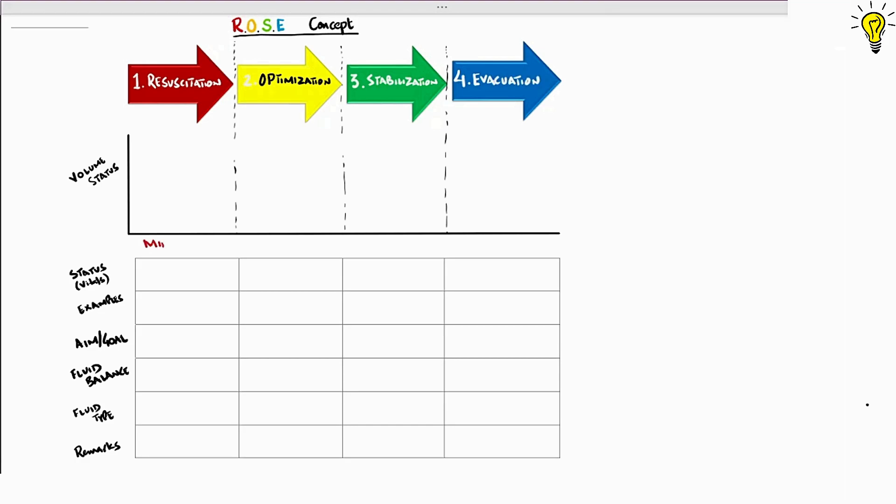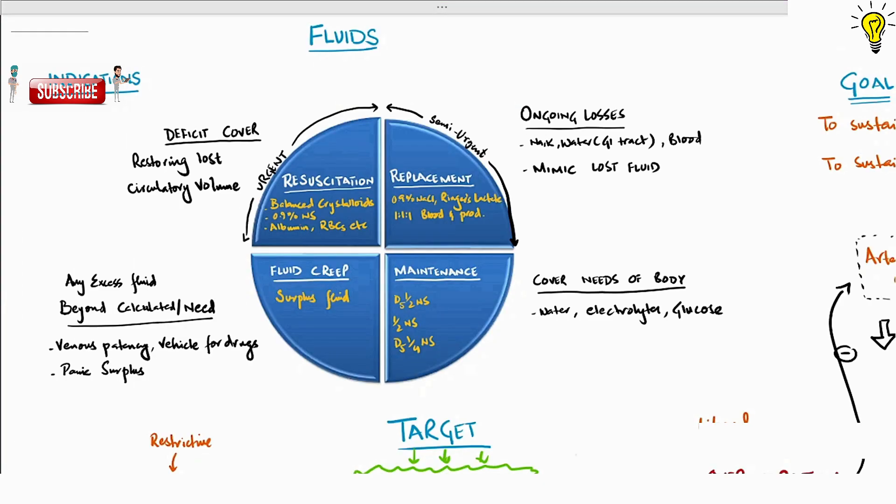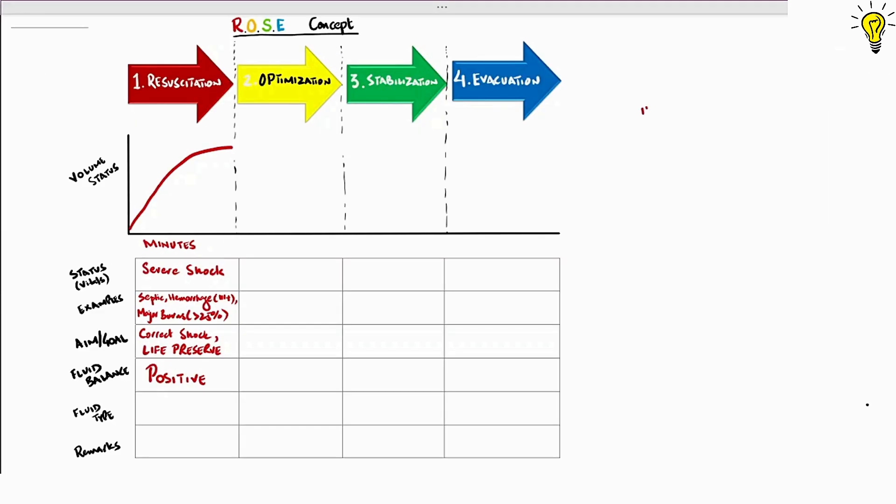Resuscitation marked in red should take minutes to accomplish. You cannot delay it. For example, severe shock, be it septic, hemorrhagic or major burns. Life preservation takes priority here. Aim is to immediately correct the shock. The positive fluid balance through this stage is a must. Remember we said resuscitation quarter in fluid circle a few minutes back?